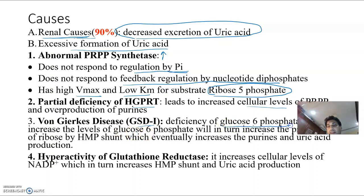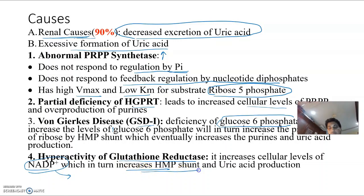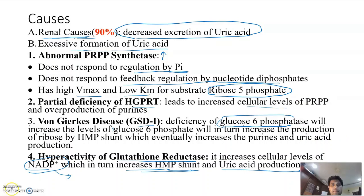Third is von Gierke's disease (glycogen storage disease type I) — glucose-6-phosphatase deficiency means glucose-6-phosphate cannot convert to glucose. Inside the cell it has only two pathways: glycolysis or HMP shunt. Increased glucose-6-phosphate undergoes HMP shunt → ribose-5-phosphate → PRPP → purines → uric acid → gout. Fourth: increased NADP from glutathione reductase overactivity increases HMP shunt, leading to increased uric acid production.